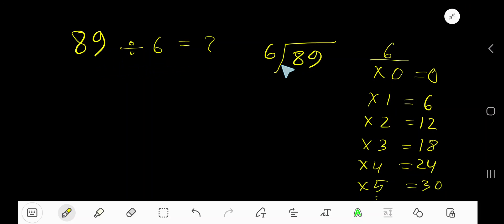89 divided by 6. Yes, 6 is a divisor so we need the multiplication table of 6.